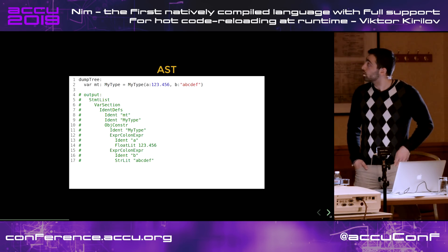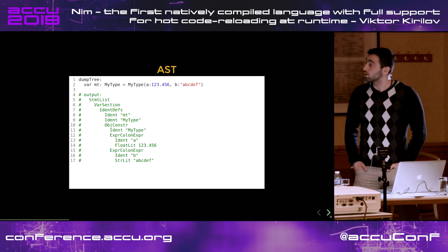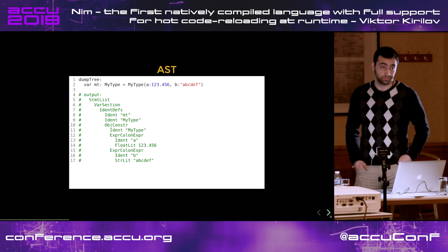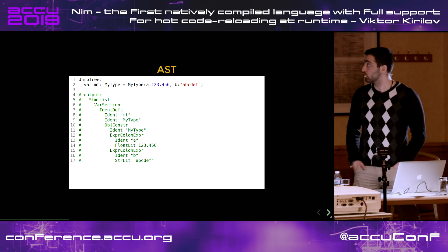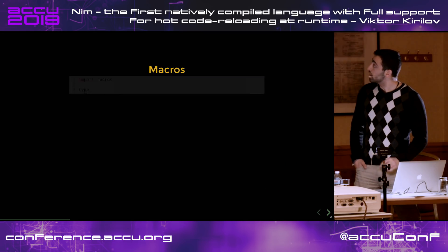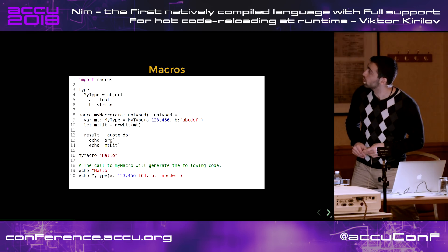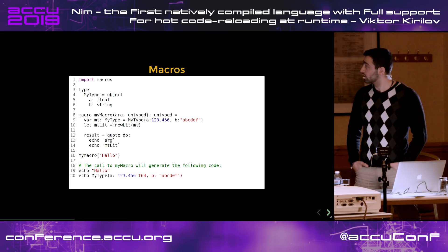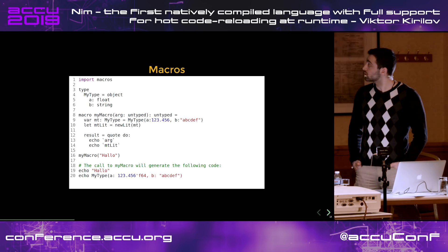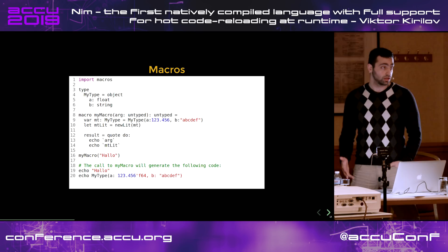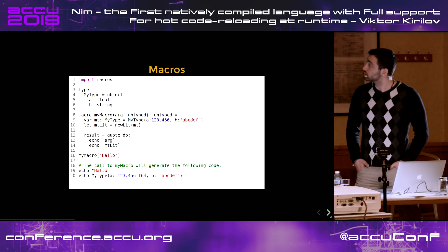The AST: we can call dump_tree on a block of code, and what we'll get is the representation of the abstract syntax tree inside of the compiler for all the code inside the block. In this case, we're defining a macro, which when we call it at the bottom of the slide with 'hello', what we get is two hello statements, which are not hidden behind function code but are inserted right there in the code.